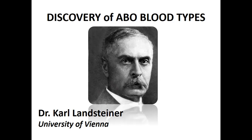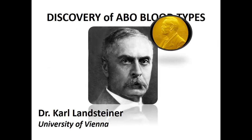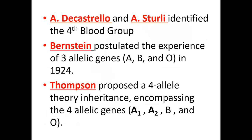Discovery of this blood group system marked the beginning of the concept of individual uniqueness defined by the RBC antigens present on the RBC membrane. In 1901, Landsteiner drew blood from himself and five associates, separated the cells and the serum, and mixed each cell sample with each serum. He was inadvertently the first individual to perform forward and reverse grouping, and for this discovery he was awarded a Nobel Prize for medicine. Other contributors were Castillo, Sterling, Bernstein, and Thompson.